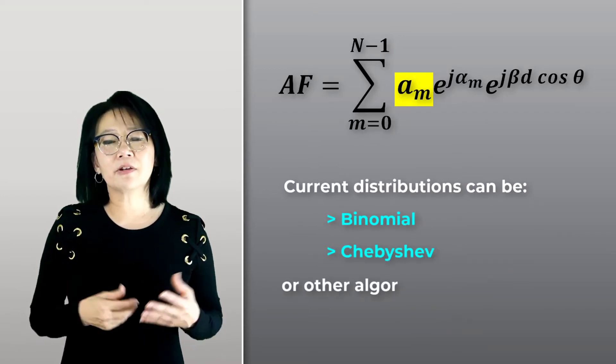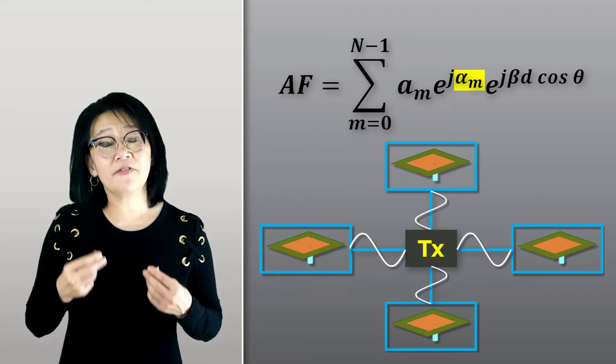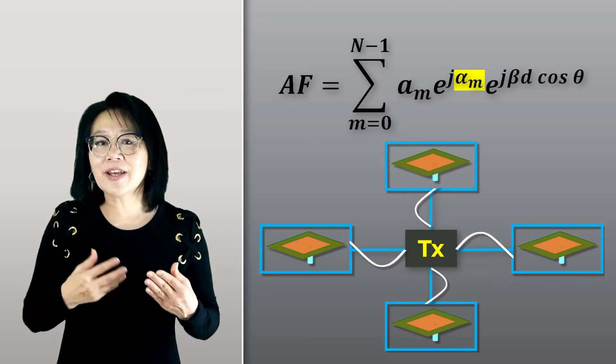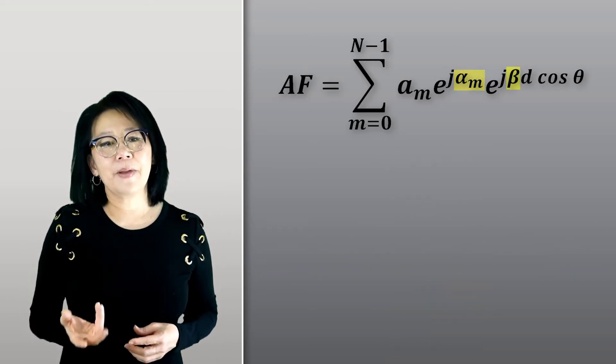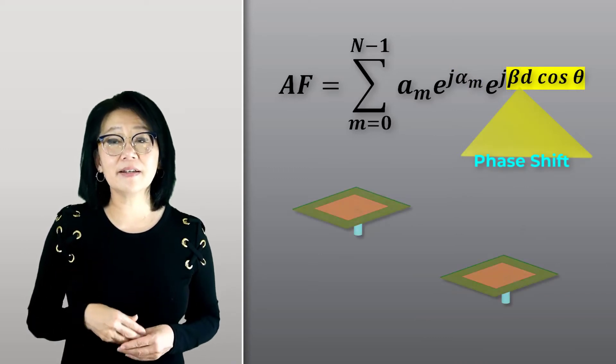Alpha_m is the phase shift of each element. Controlling alpha_m enables one to steer the overall beam. Beta is the wave number, and beta d cosine theta is the phase shift caused by the element spacing.